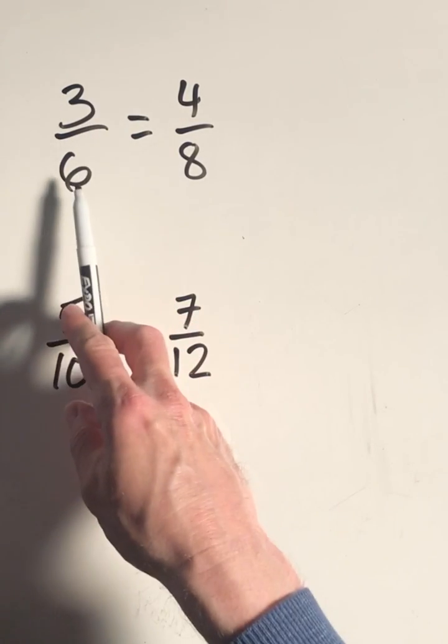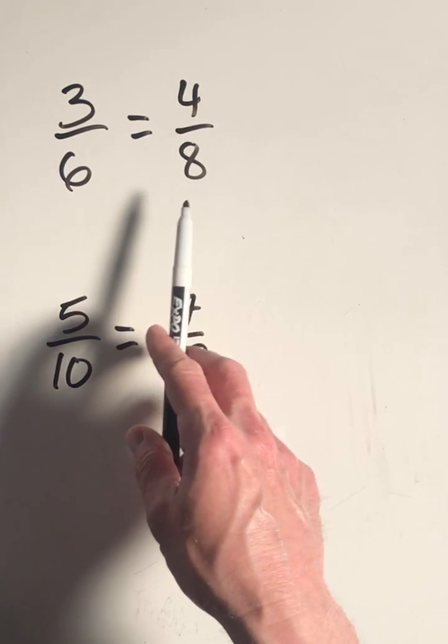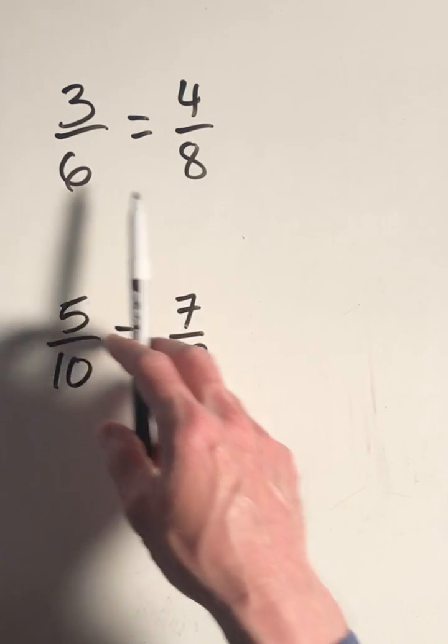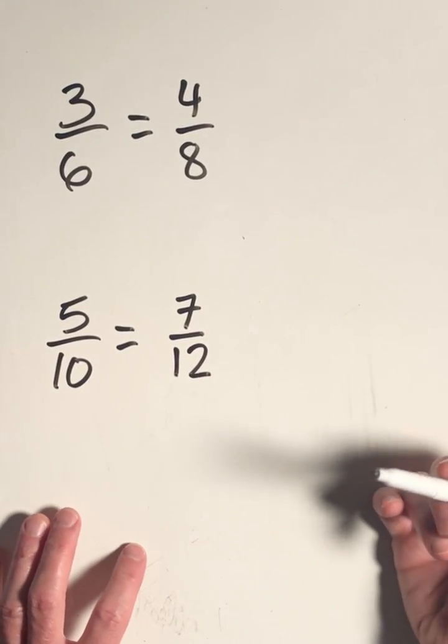When we are given one ratio equal to another ratio, they are said to be in proportion. Oftentimes we will have to check whether two ratios are in proportion, and there's a very easy way to do that.